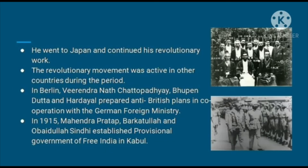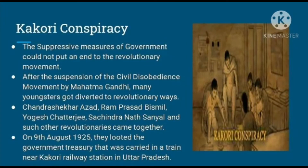The revolutionary movement was also active in other countries during this period. In Berlin, Virendranath Chattopadhyay, Bipin Datna, and Hardiyal prepared an anti-British plan in cooperation with the German foreign ministry. In 1915, Mahendra Pratap, Barkatullah, and Obedullah Sindhi established the Provisional Government of Free India in Kabul. The Britishers tried many suppressive measures to put an end to the revolutionary movement.